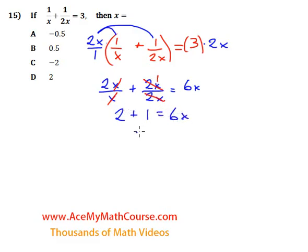2 plus 1 is 3. Then we can divide both sides by 6 and x is going to be 3 divided by 6 which is half.